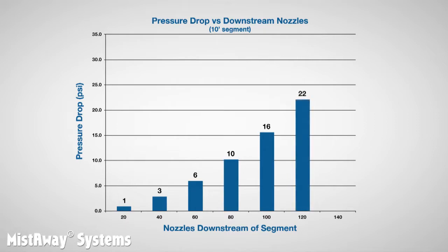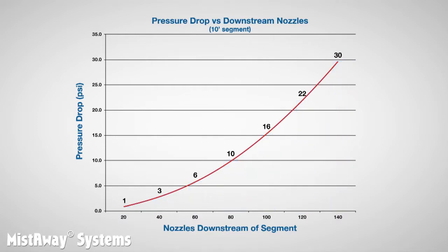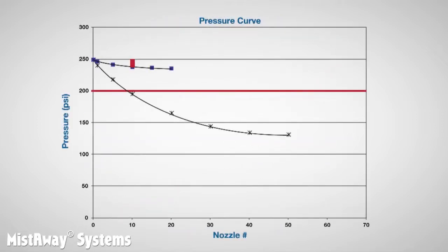We continued adding flow until we reached 140 nozzles worth, which as we saw in the first fundamentals video is about the capacity of the pump. At that point the pressure drop in our 10-foot segment was 30 psi — multiplying our starting flow by 7 times caused the pressure drop to increase 30 times. What we've just illustrated is called the exponential relationship between pressure drop and flow, and it is very important to be aware of this phenomenon as you design your nozzle circuits.